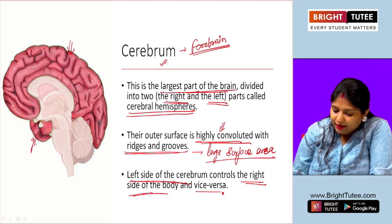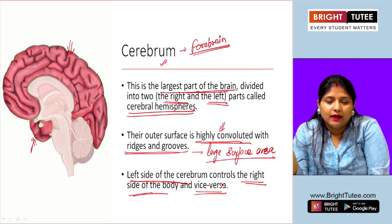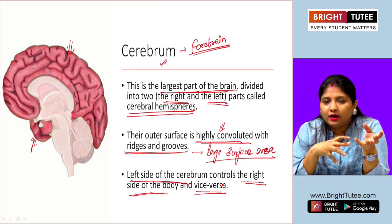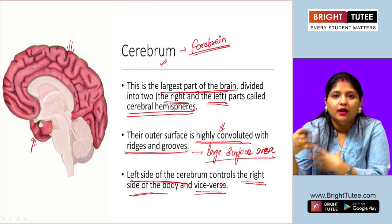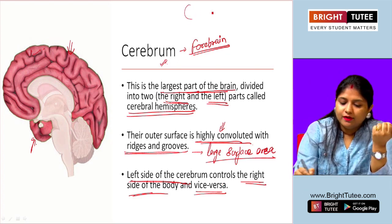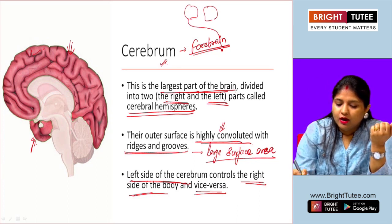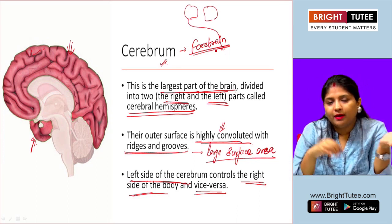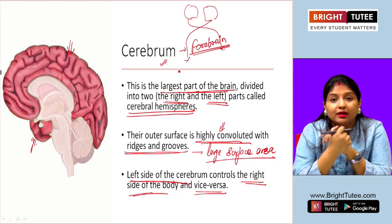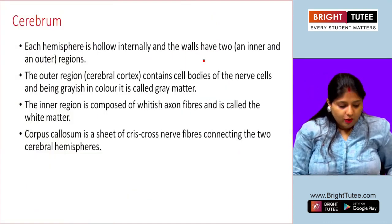Interestingly, the left side of the cerebrum controls the right part of the body and vice versa. The left hemisphere controls the right side of the body, and the right hemisphere controls the left side. This is something very interesting about the structure of the cerebrum.